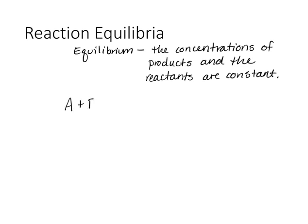Let's say we have reactants A and B, and they're forming products C and D. Initially we have just reactants, and those are going to react to form the products. Not only do we have a forward reaction, but we also have a reverse reaction, which is why we have the two arrows there.